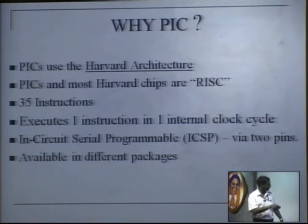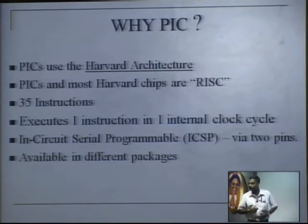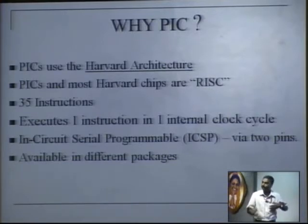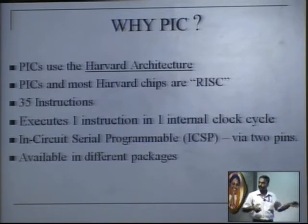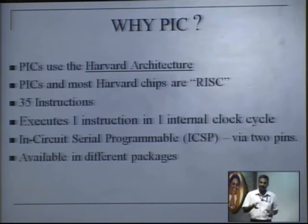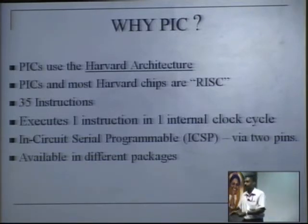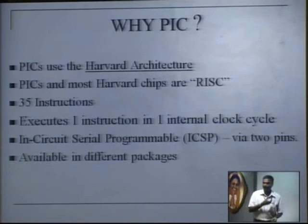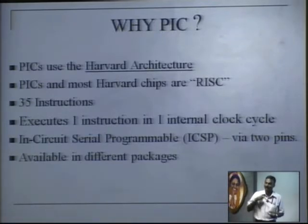The 35 instructions and execution in one clock cycle are features of RISC. Next is In-Circuit Serial Programming (ICSP). That means there are two lines — receive and transmit — through which you can program. Only two lines are required for programming. In-circuit means you need not remove the chip from the circuit. Usually you would take the chip out, put it in a programmer, and place it back. With ICSP, you keep the chip in the circuit itself and program it through those two lines.